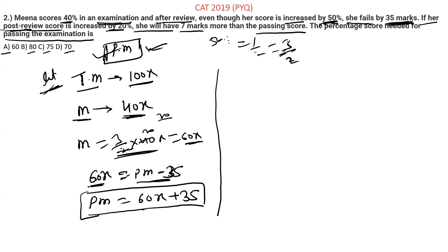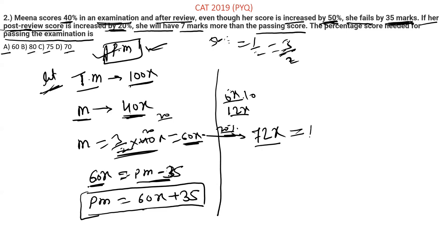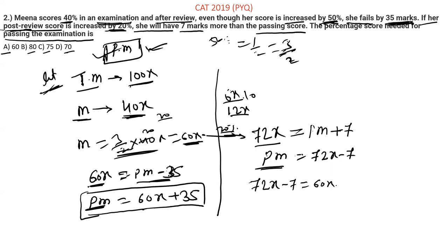If her post-review score is increased by 20%, 20% of 60x is 12x, so the new score is 60x plus 12x equals 72x. She will have 7 marks more than the passing marks, so 72x equals passing marks plus 7, meaning passing marks equals 72x minus 7. This is equation 2. So equate both equations: 72x minus 7 equals 60x plus 35.